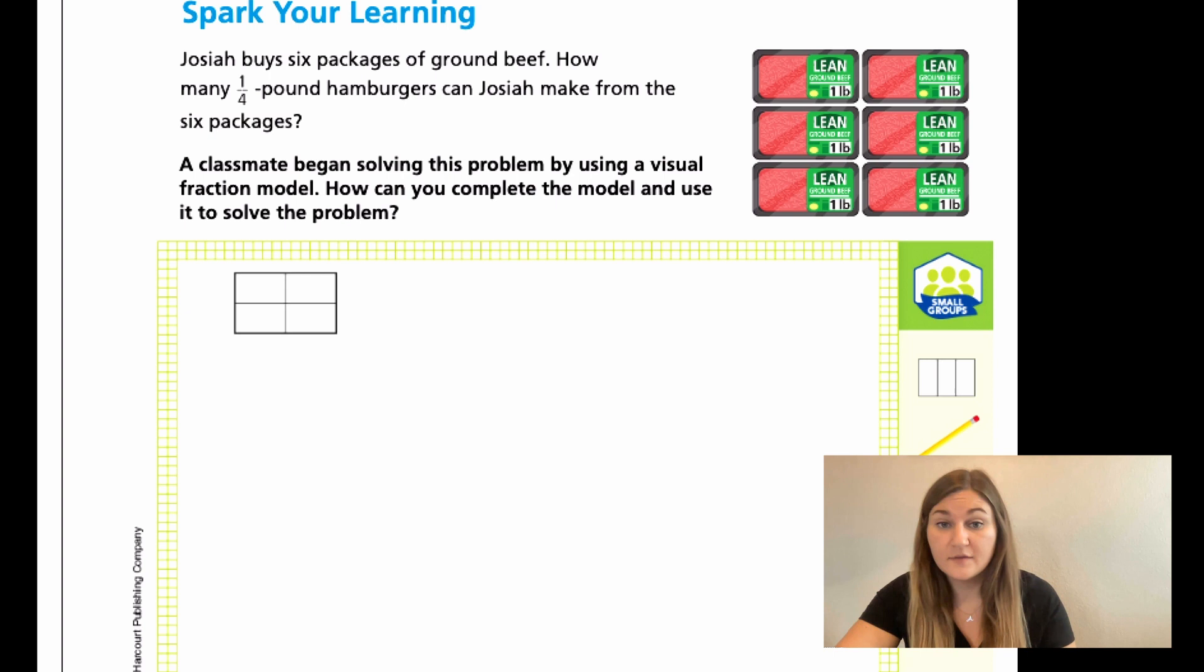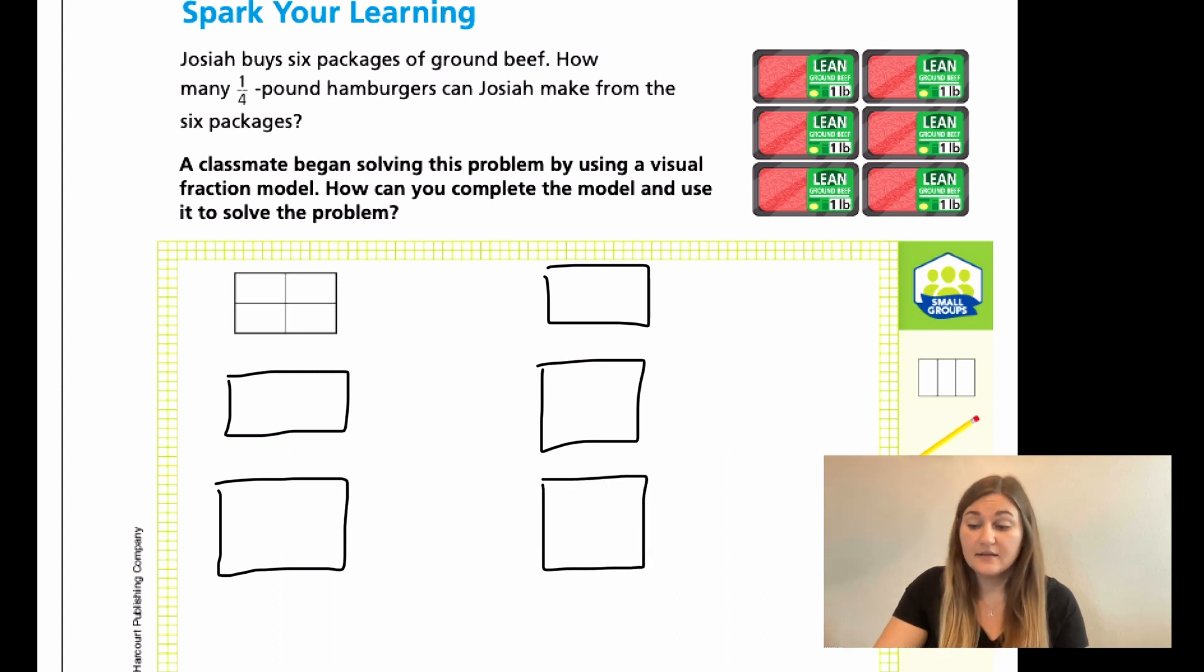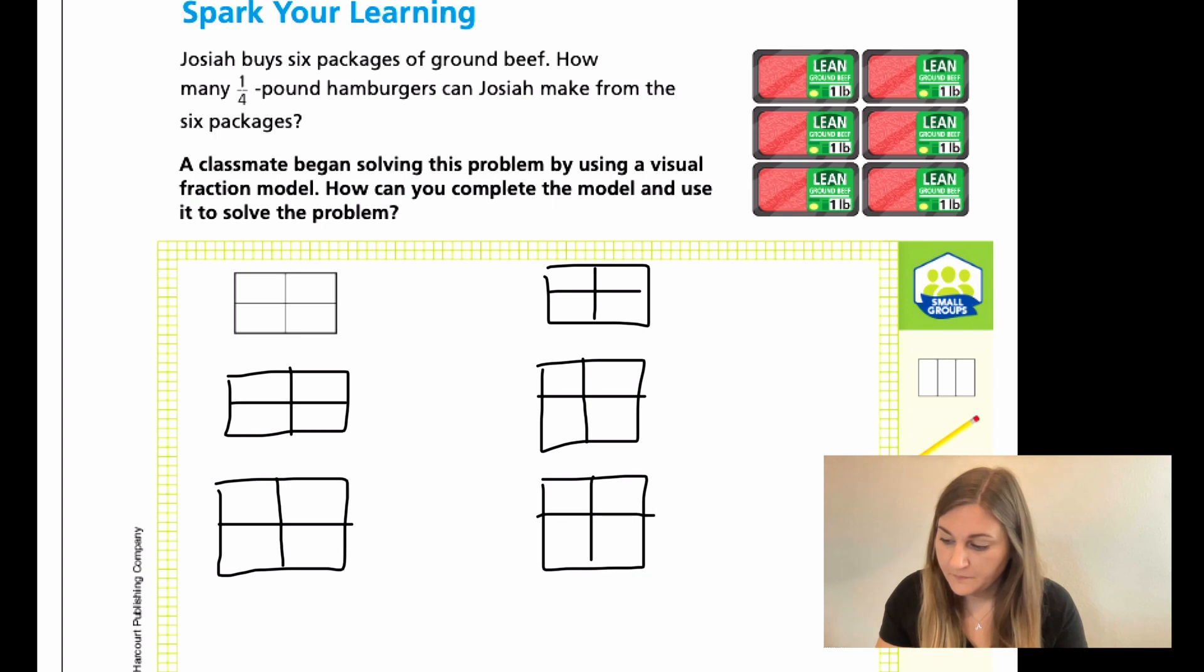So we have one of the packages already done for us. We just have to keep it going. So that was one package. This would be two packages, three packages, four packages, five and six. And he cut it. The classmate cut it into fourths to show the one-fourth pound. So we want to do the same. Alright, so that would show our six packages of ground beef, each cut into fourth for our one-fourth pounds.